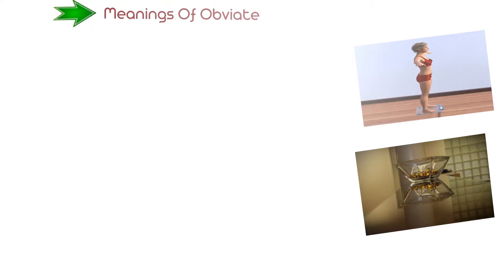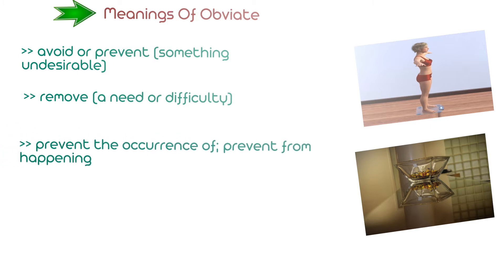If you put it in other words, obviate means to avoid or prevent something undesirable, remove a need or difficulty, prevent the occurrence of or prevent from happening. Next, do away with.